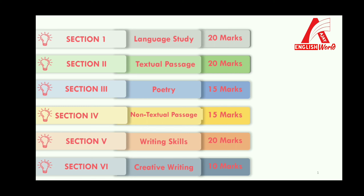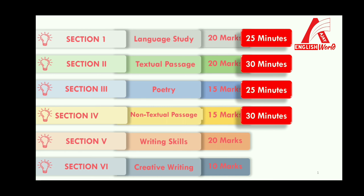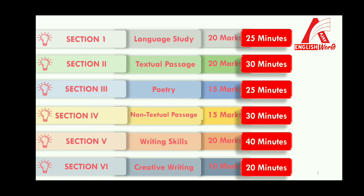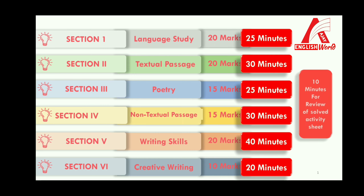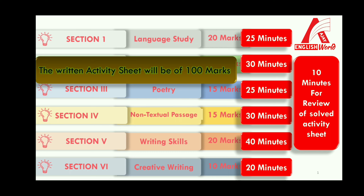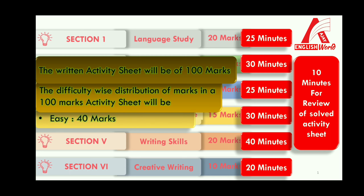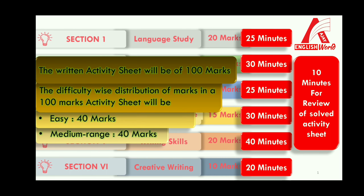You can give 25 minutes for section one, 30 minutes for section two, 25 minutes for section three, 30 minutes for section four, 40 minutes for section five, and 20 minutes for section six. You should give 10 minutes for review of the entire activity sheet. The total activity sheet will be of 100 marks, with 40 marks for easy questions, 40 marks for medium range questions, and 20 marks for challenging questions.